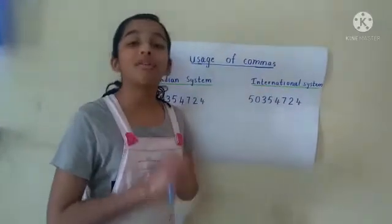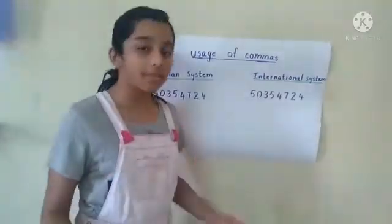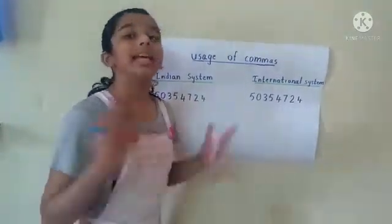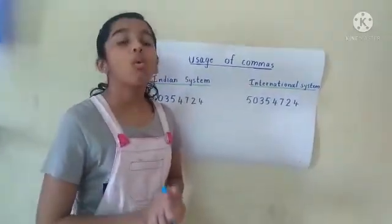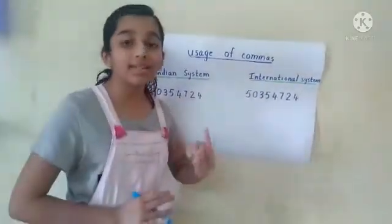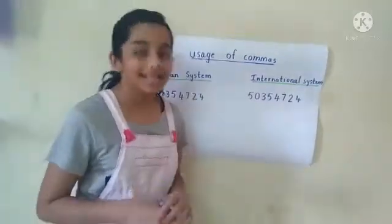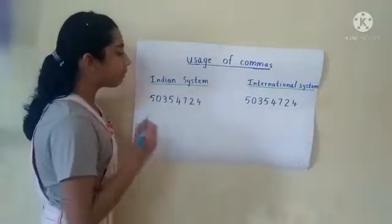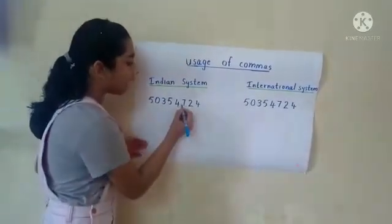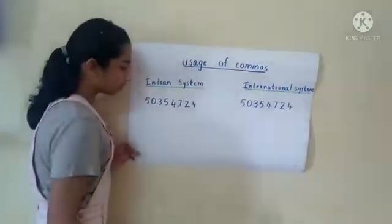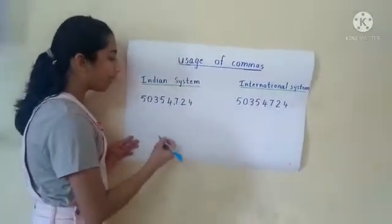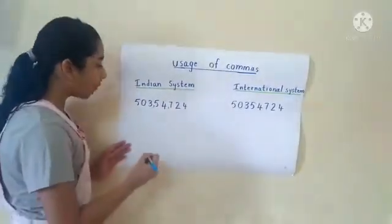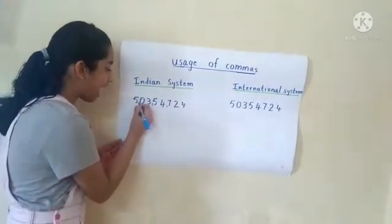In the Indian System of Numeration, we use commas to mark thousands, lakhs, and crores. The first comma will come after the hundreds place, the second comma will come after the ten-thousands place, and the third comma will come after the ten-lakhs place.